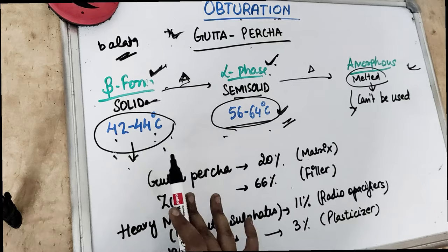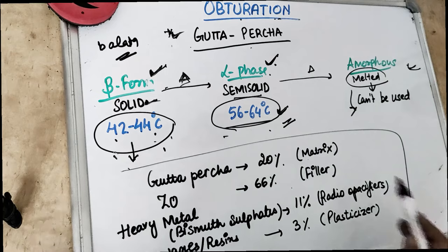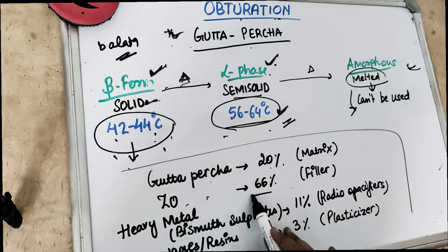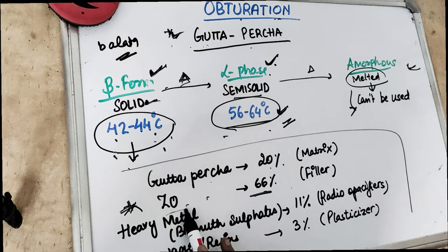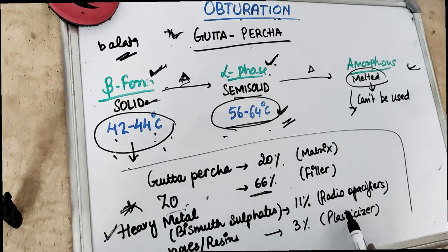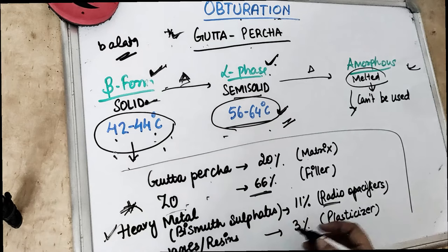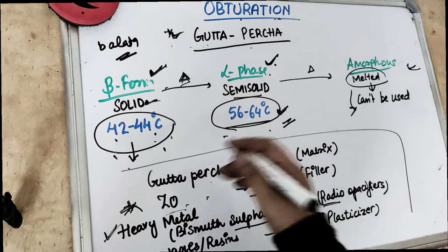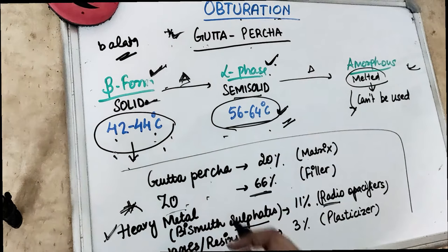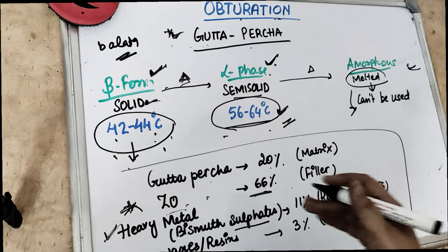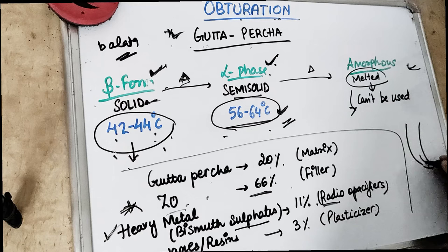Gutta-percha is composed of gutta-percha resin which is only 20%, and zinc oxide which is the main principal ingredient — used as a filler. We also add heavy material for radiopacity — bismuth sulfate at 11% — so it is clearly visible on X-ray. And for flowability so that it can go into curved canals, we add waxes and resins at 3% for the plasticity of the gutta-percha.